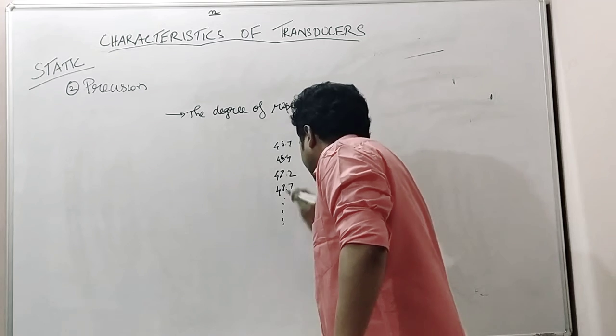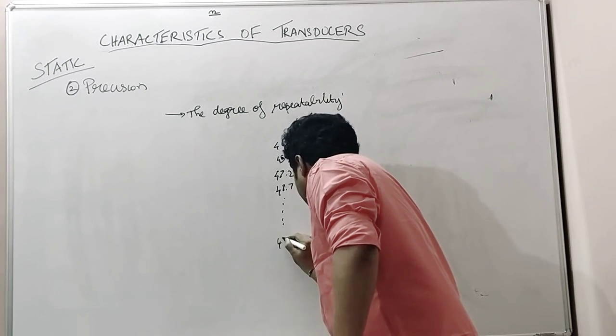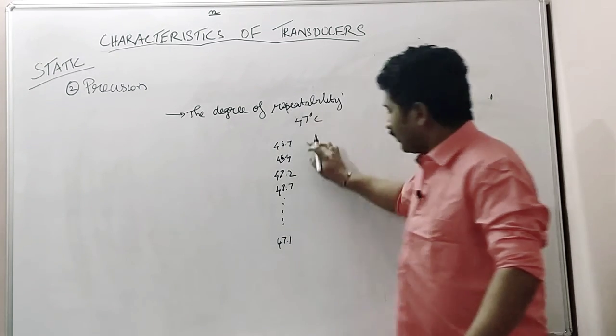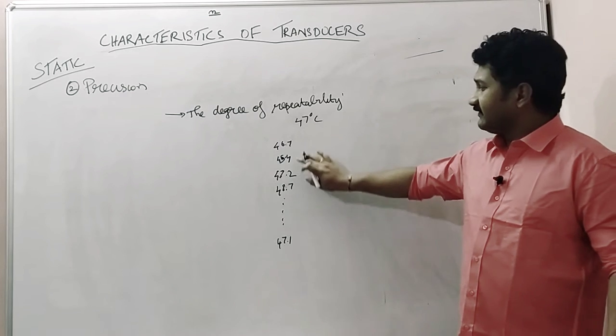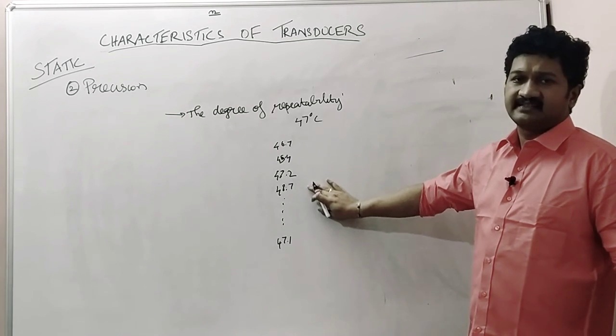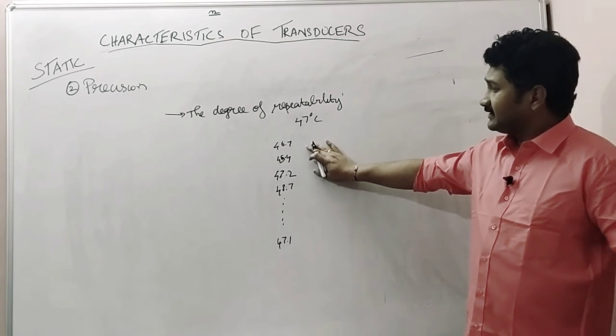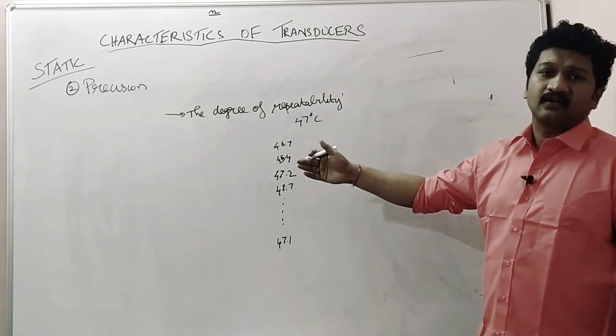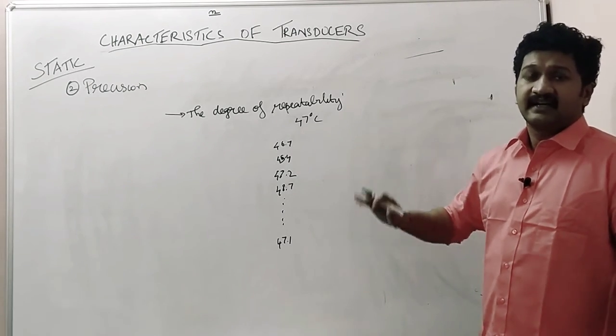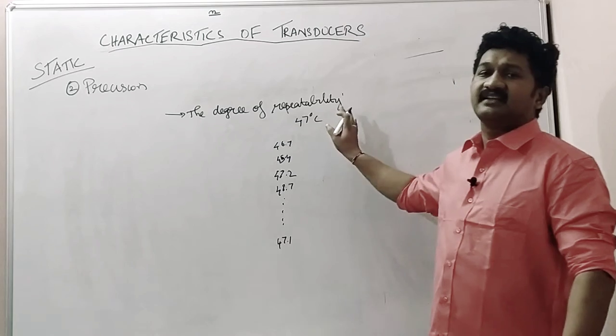Like that, it is giving values. All these 10 values are near to 47 degrees Celsius. We should not confuse the concept of accuracy and precision. That is degree of closeness and this is degree of repeatability.